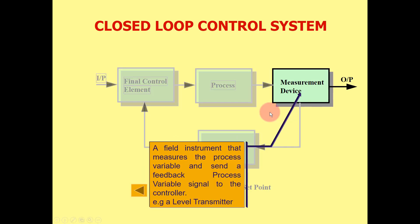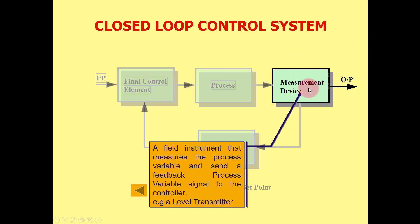The measurement device is a field instrument that measures the process variable and sends a feedback process variable signal to the controller. For example, a level transmitter measures the reading — this reading we call the process variable — and feeds it back to the controller.